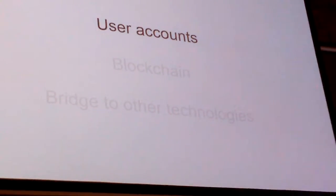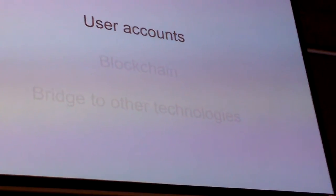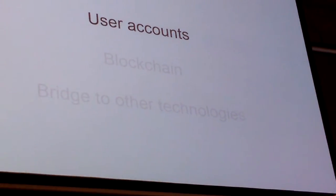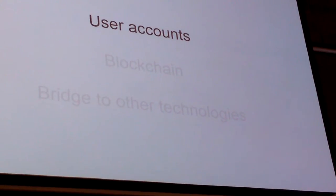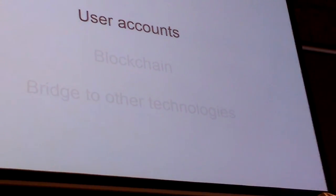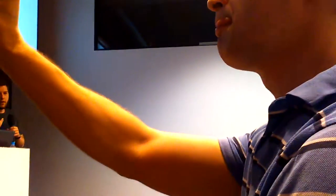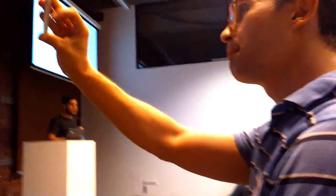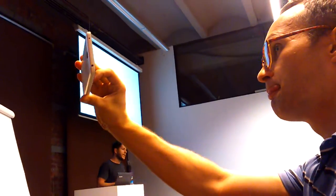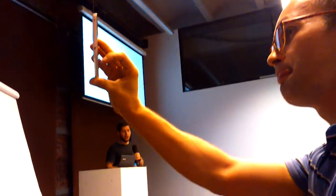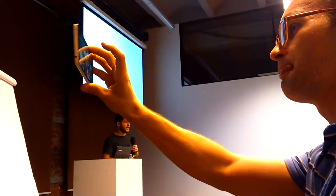What else does a social network need? It needs user accounts — you have that on Lisk with your passphrase. You can generate or access one unique account on the blockchain. You need the blockchain for storage of status updates, messages, and so on — you have this with your own sidechain on Lisk.